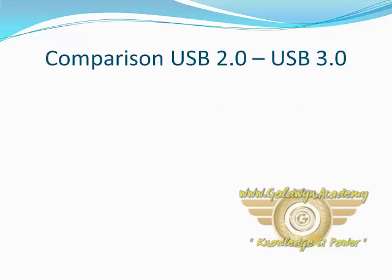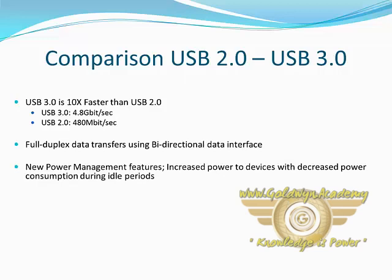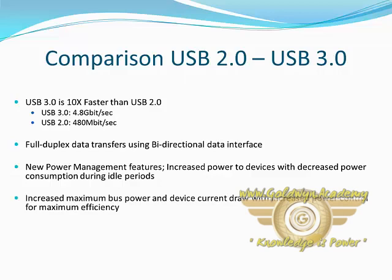Comparison of USB 2.0 and 3.0. USB 3.0 is faster than USB 2.0 as we discussed earlier. It also supports full duplex data transfers using a bi-directional data interface. New power management features include increased power to devices with decreased power consumption during idle periods.